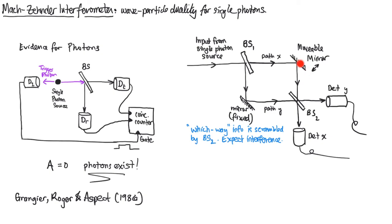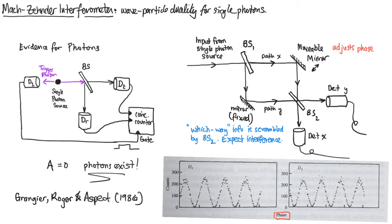So if you adjust this mirror such that these two paths are exactly the same length, then one of these detectors will be bright. All of the light will arrive at one detector, and the other detector will be dim, meaning you get constructive interference at one detector and destructive interference at the other detector. And as you move this mirror back and forth, the intensity of light at each detector changes in a complementary way. And here we see the actual data from this experiment showing that when detector X is bright, detector Y is dim.